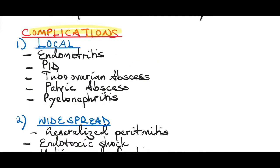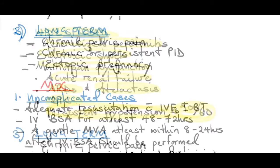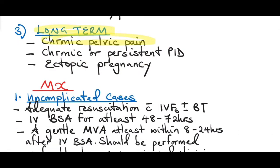Complications of a septic miscarriage: local complications include endometritis, pelvic inflammatory disease, tubal ovarian abscess, pelvic abscess, and pyelonephritis. Widespread complications include generalized peritonitis, endotoxic shock, multi-organ dysfunction causing acute renal failure, acute respiratory distress syndrome, atelectasis due to pulmonary edema, disseminated intravascular coagulation, and persistent hypotension below 90/60 — which is septic shock. Long-term complications include chronic pelvic pain, chronic pelvic inflammatory disease, and ectopic pregnancy due to fibrosis and adhesions after infection.